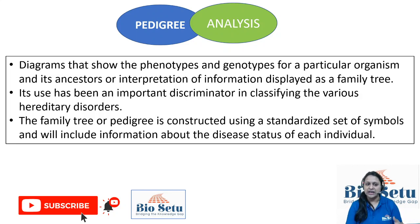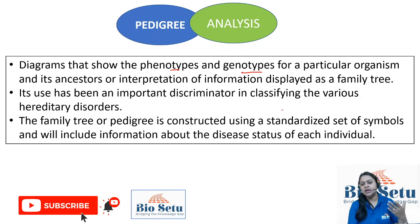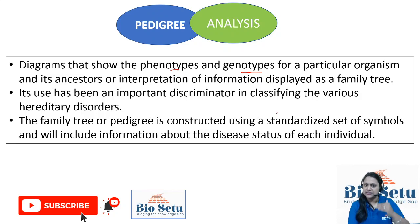Pedigree is basically a diagram that shows the phenotype and genotype for a particular organism and its ancestors — their first generation, second generation, third generation — creating information. On the basis of that information, in the form of a tree, they construct the first, second, and third generations. This is called pedigree.